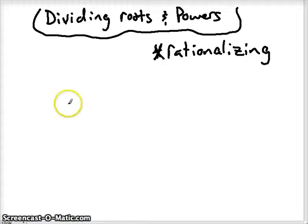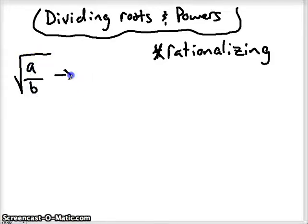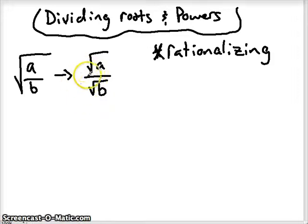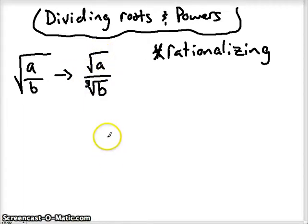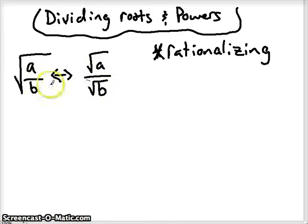One thing we got to remember is our quotient property. If I have two numbers being divided under one radical, I can always rewrite that with each number being in their own radical, as long as the index is the same. If the indexes are not the same — say we have the square root on top and a cube root down here — we would not be able to rewrite it in that form. It has to be the same index on top and bottom. So now because they're both square roots, we can go back and forth between these two forms, whichever one helps us simplify the easiest.